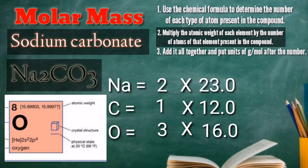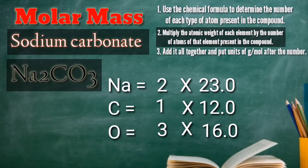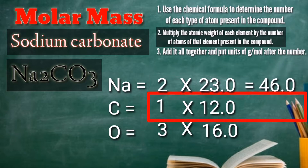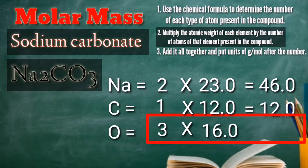Based on rule number two, we are going to multiply by the number of atoms. So, 2 times 23 is 46; 1 times 12 is 12; and 3 times 16 is 48.